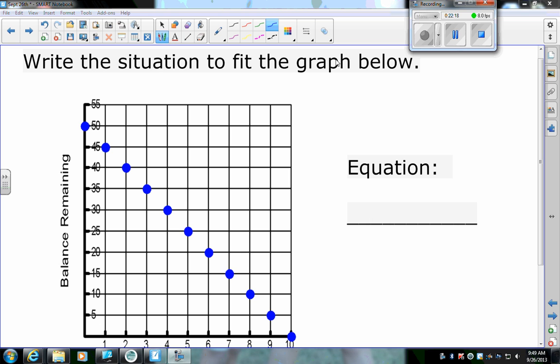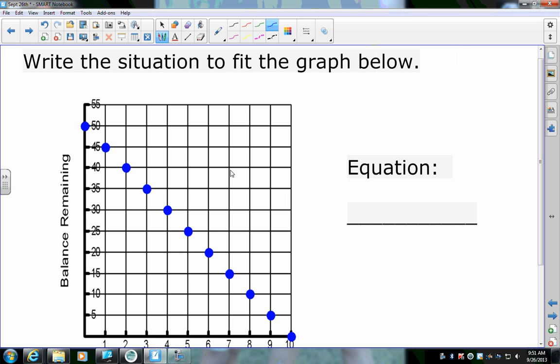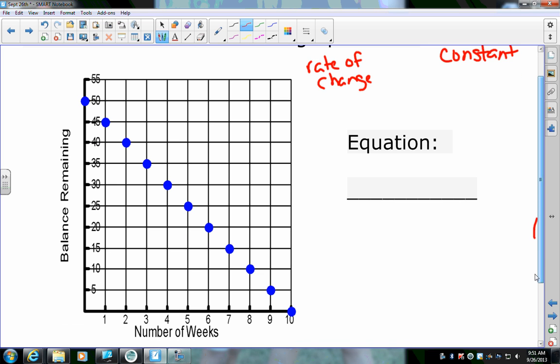So, on this next one, it says, write the situation to fit the graph below. So, I want you to find the equation and write the situation, write a situation. First, I want to go through and find the pieces in order to write the equation. I know I need two things. I know I need the rate of change. And I know I need the constant. The constant is probably the easiest to go through and find on here, because it's where it crosses the y-axis. It's at zero and something. So, it's right here up at the top, which is, my constant is zero and 50. Now, my rate of change, my line is going down, so that means I'm decreasing, so I'm going to be subtracting off. What am I changing by each time? I'm going down five and over one.